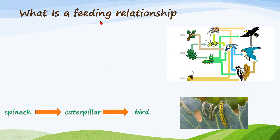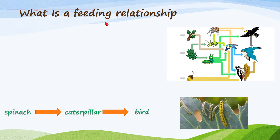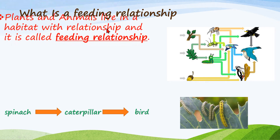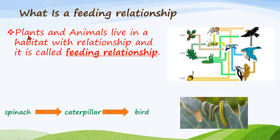So what is a feeding relationship? Plants and animals live in the habitat together and this is called a feeding relationship. When plants and animals live together, it is known as a feeding relationship.